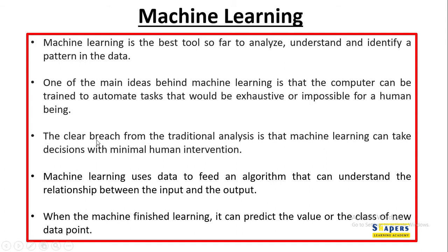The clear difference from traditional analysis is that machine learning can take decisions with minimal human intervention. Machine learning uses a data-driven algorithm that understands the relationship between input and output. When the machine finishes learning, it can predict the value or the class of a new data point — that output class is referred to as a classifier, which will be explained in later slides.